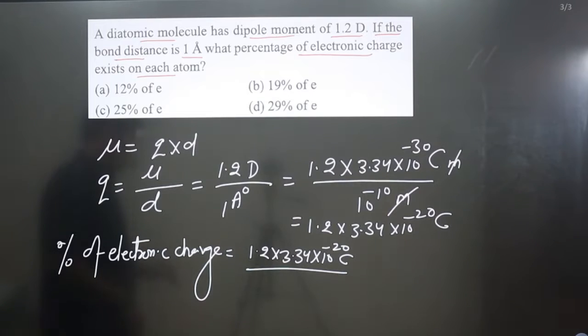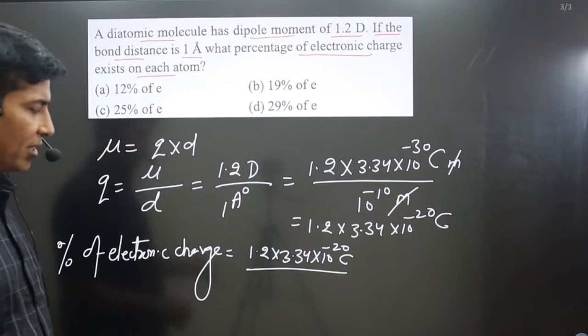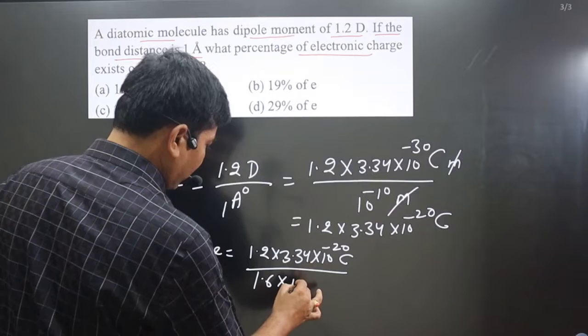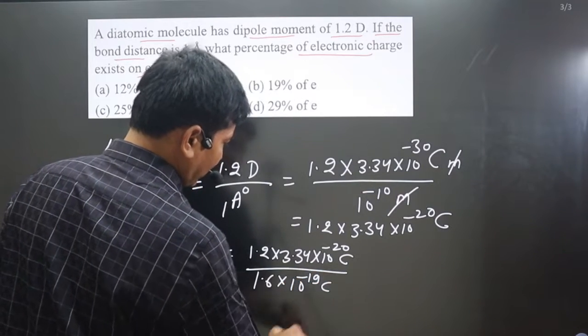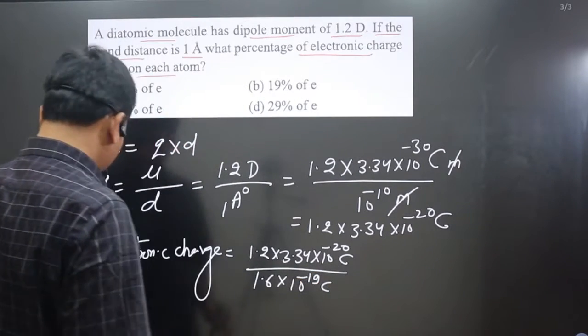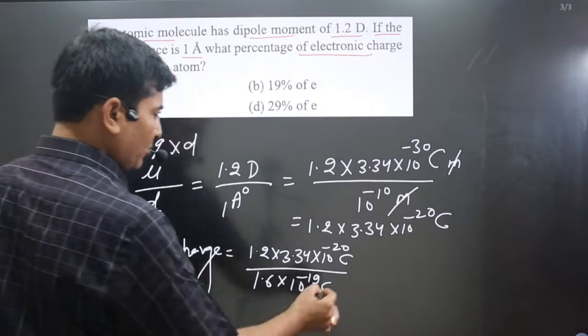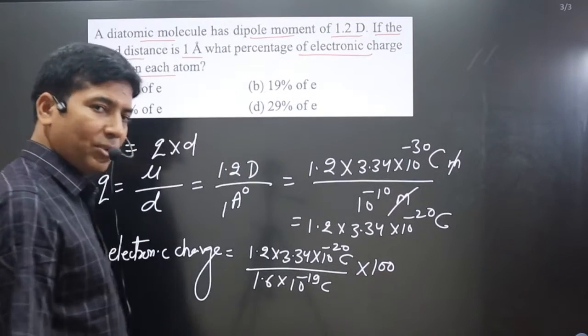Divided by the charge of electron, any structure of atom we have learned, the charge of electron that is 1.6 multiplied by 10 to power minus 19 and coulomb is there. And since the percentage value we are calculating, so in this formula you need to multiply it by 100. Now we can simplify.